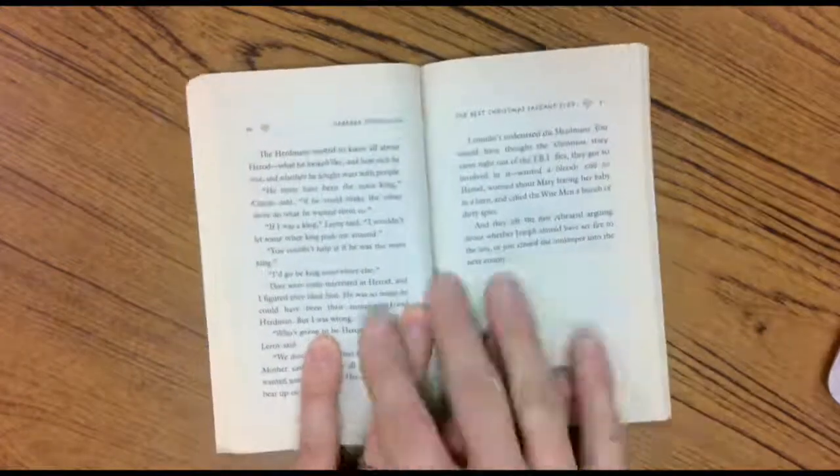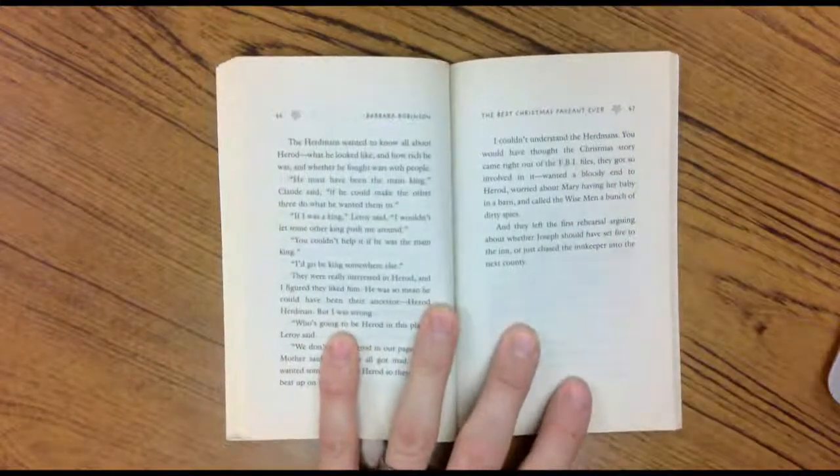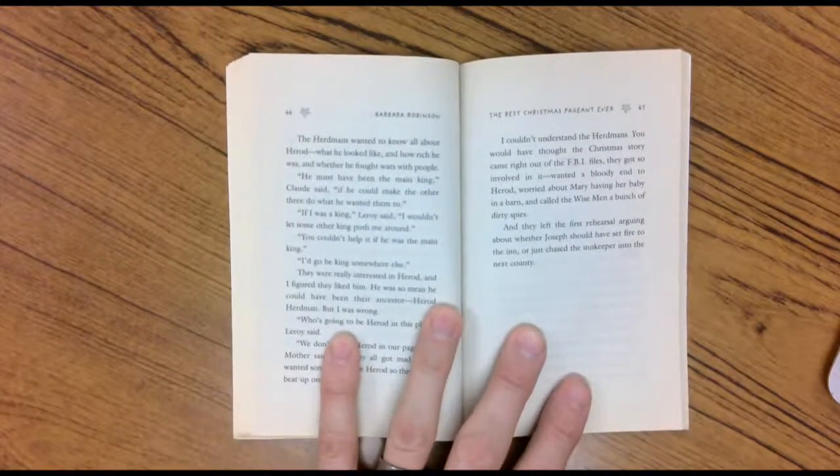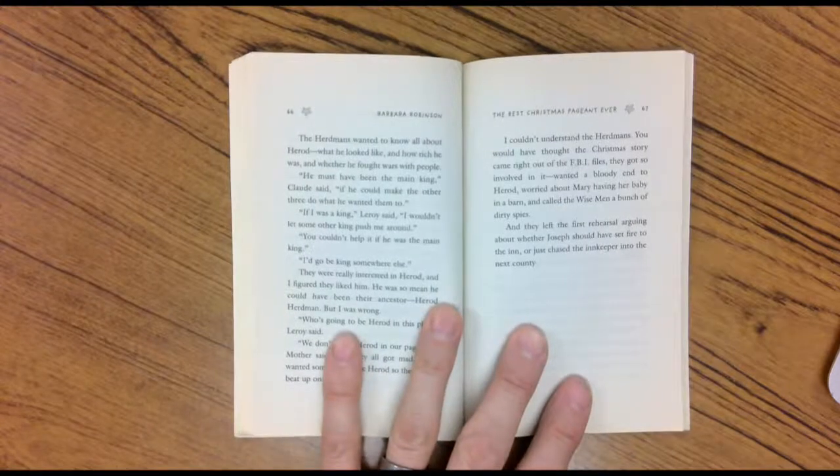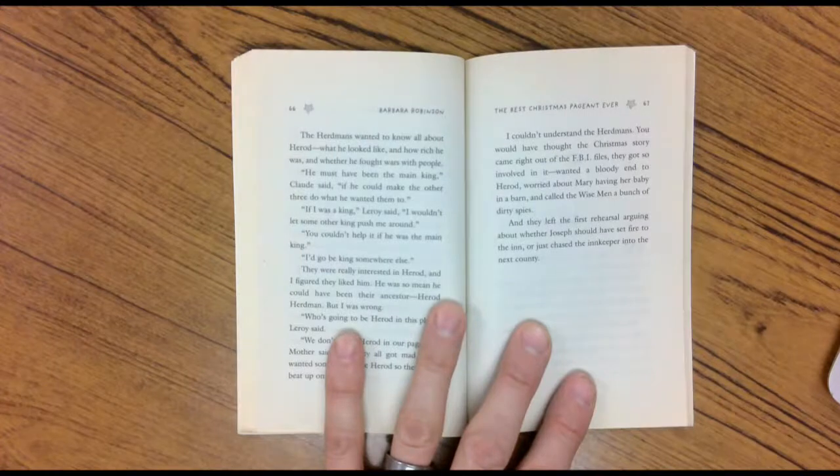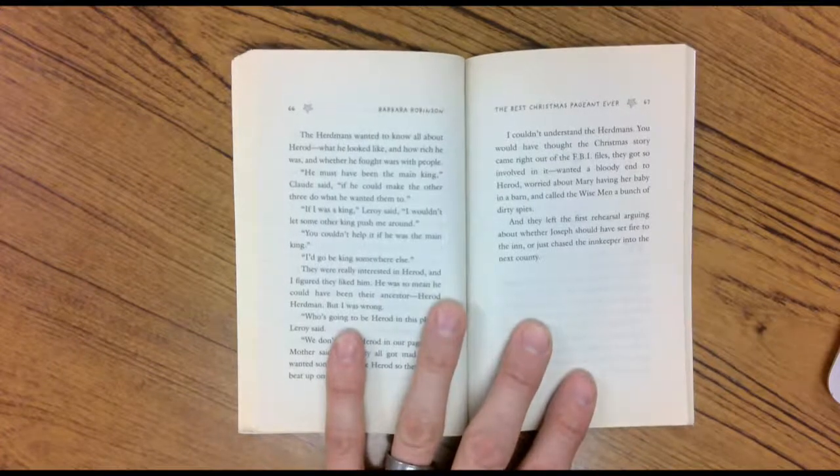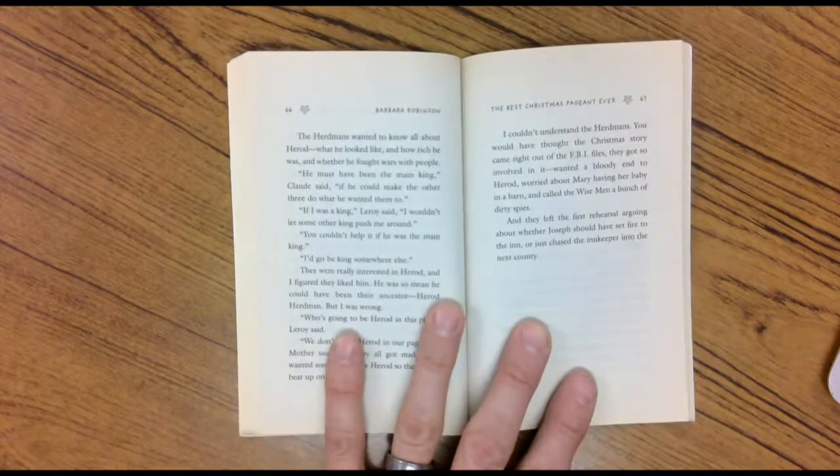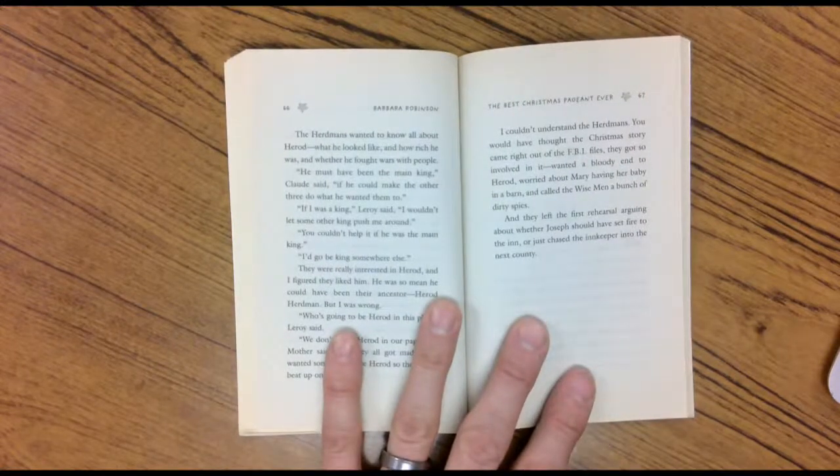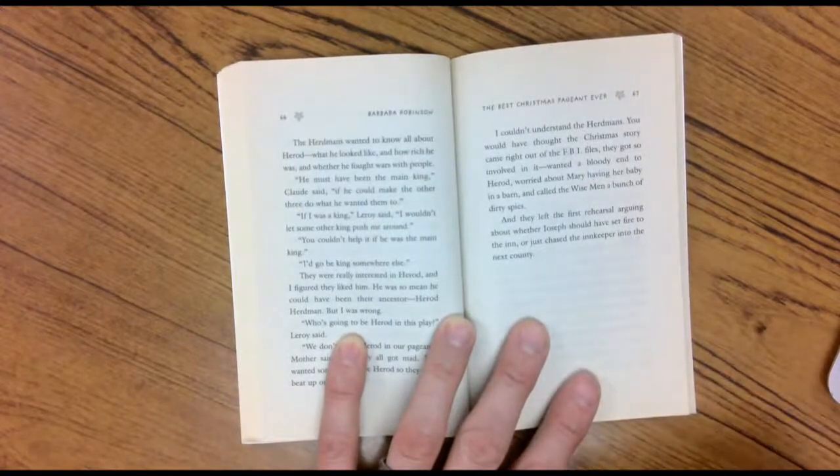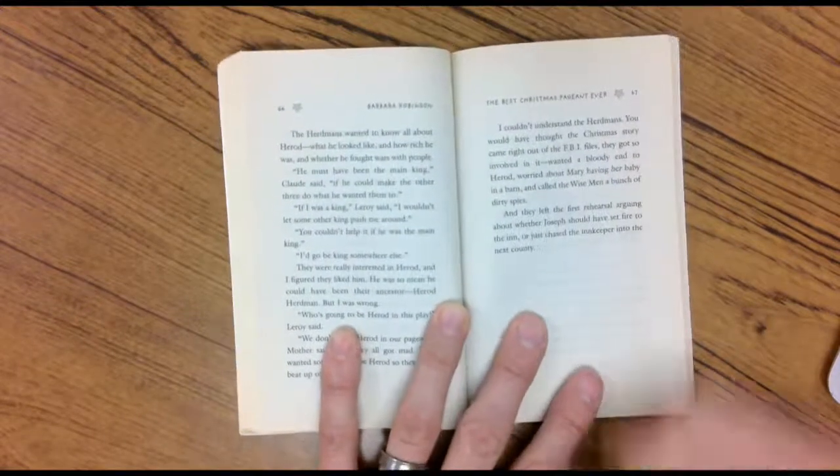I couldn't understand the Herdmans. You would have thought that Christmas story came right out of the FBI files. They got so involved in it, wanted a bloody end to Herod. Now they want a bloody end to Herod because they want to protect Jesus. They were worried about Mary having her baby in a barn and they called the wise men a bunch of dirty spies. And they left the first rehearsal arguing about whether Joseph should have set fire to the inn or just chased the innkeeper into the next county. Oh my goodness. I guess it makes me think about this. We just always think about this Christmas story and we read it and it's like, oh yeah, that's just what happened. Could you actually imagine taking a pregnant woman to a barn and having her give birth? We go to fancy hospitals with lots of doctors and nurses. Who was there to help Mary and Joseph? Just some animals. And then what do they do? They put them in a manger. So the Herdmans, they're on the right track. They're like, man, this Herod's mad. Let's mean. Let's get him. Okay guys, chapter five and six tomorrow.